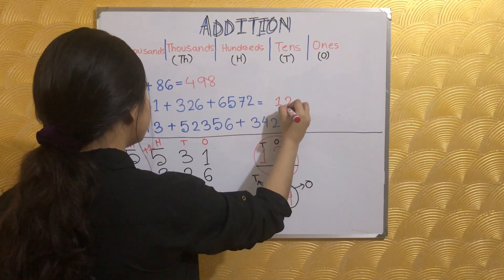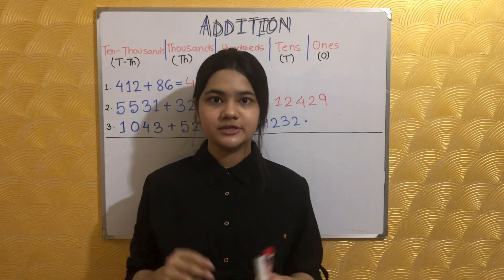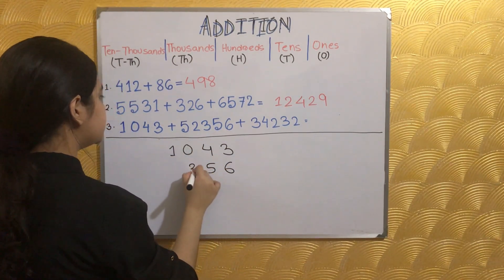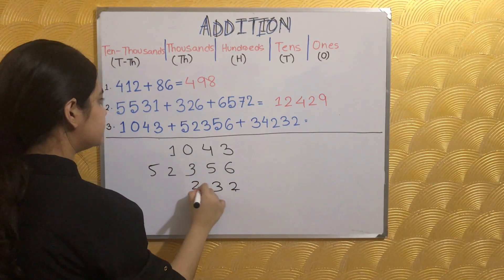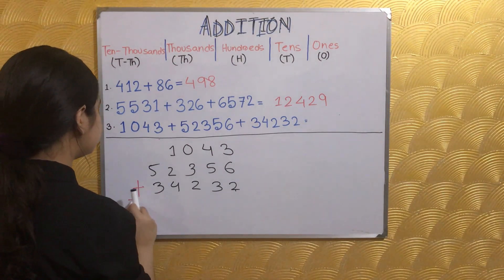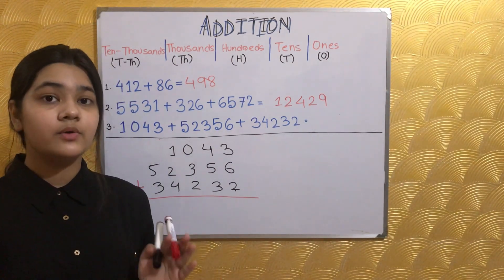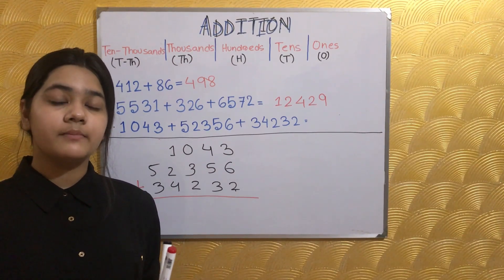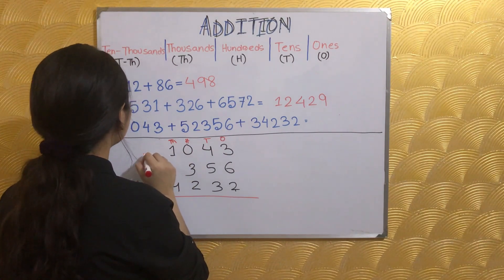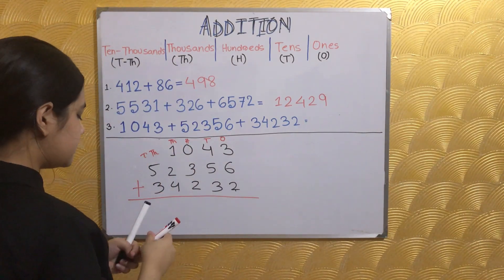Adding all three numbers together gives us 12,429. Now let's add three large numbers together. We have 1043, 6532, and 5243 — a very large set of numbers. Again, while writing them, you want to make sure you are stacking them up according to their place value, or else your whole addition will be wrong. Ones, tens, hundreds, thousands, ten thousands.